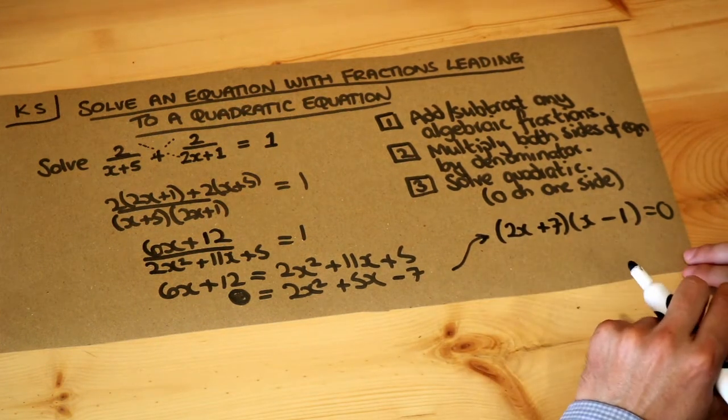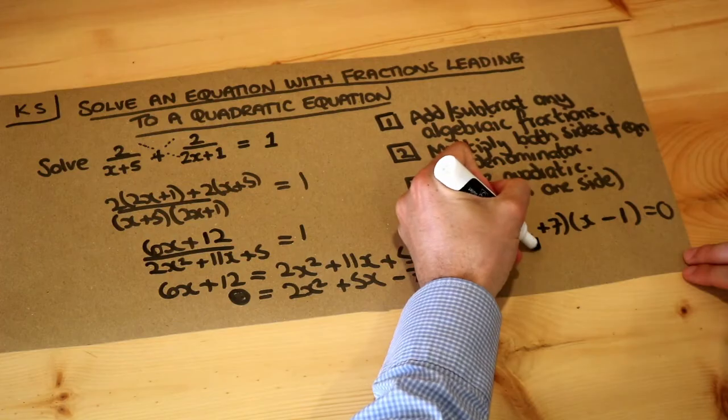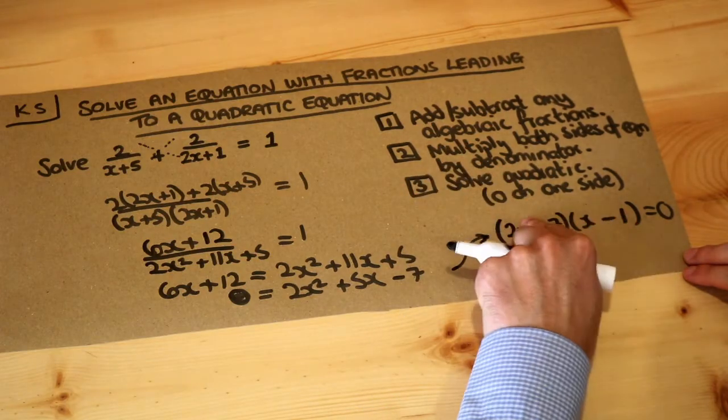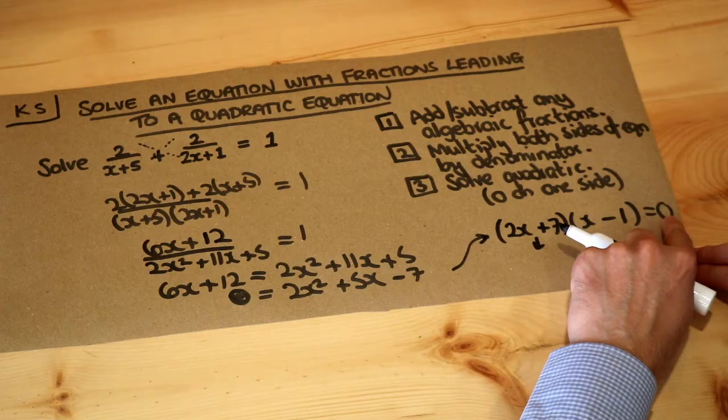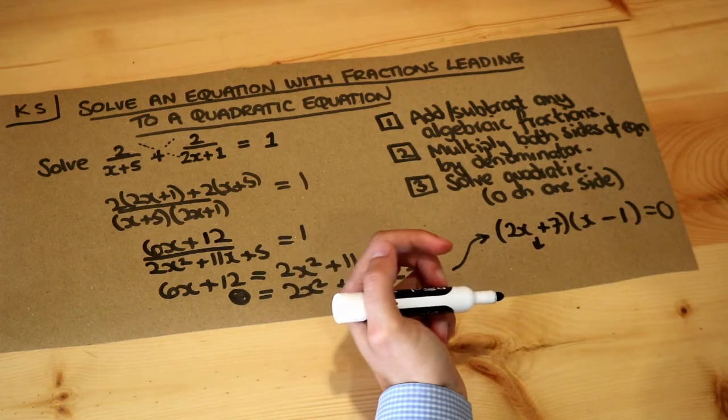So now we've got this factorized equation, and then we make each bracket zero because we've got two things multiplied together equal to zero, then one of those numbers has to be zero.